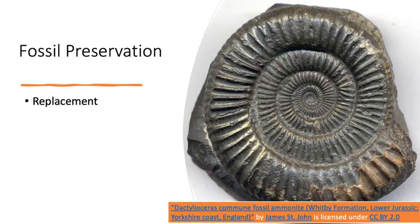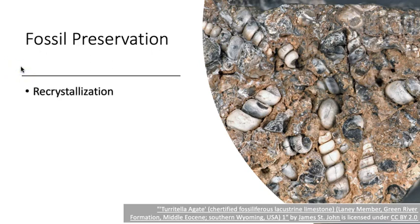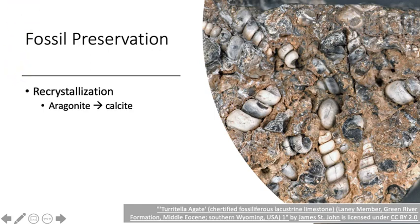Replacement is the process of chemical-rich fluids dissolving and replacing the original fossil material with minerals such as quartz and pyrite, preserving the details of the original organism in the process. Shells made of aragonite can be chemically unstable after burial, and will recrystallize to more stable calcite, making them more resistant to weathering and more likely to be preserved as fossils.